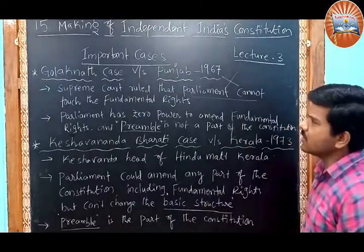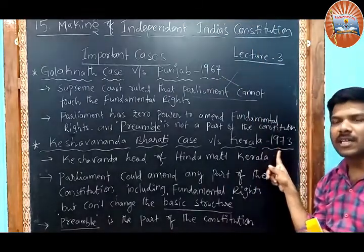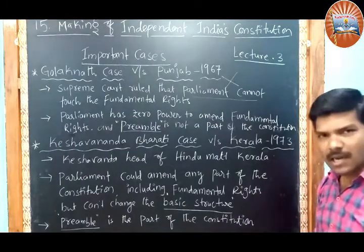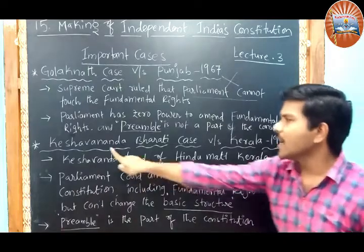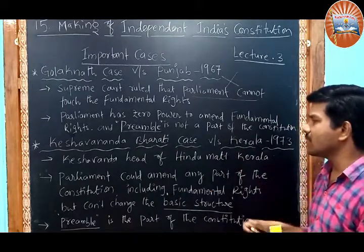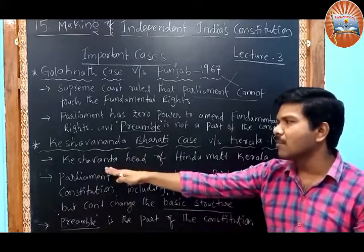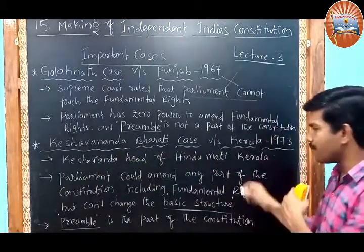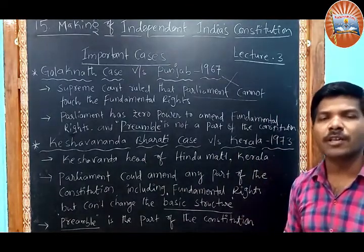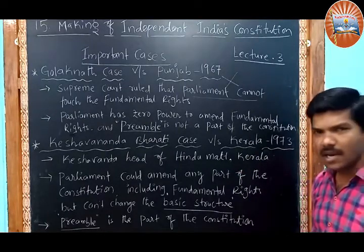Now let us come to Keshavananda Bharti. The judges of 1967 gave a different judgment, and the judges of 1973 gave a different judgment. Keshavananda Bharti versus Kerala — Keshavananda Bharti was the head of a Hindu math in Kerala. This case is also related to land issues.